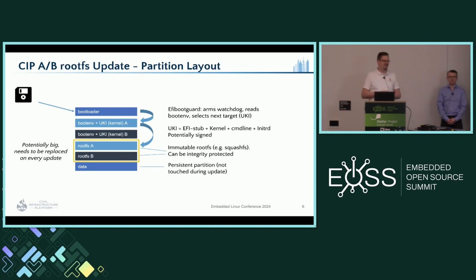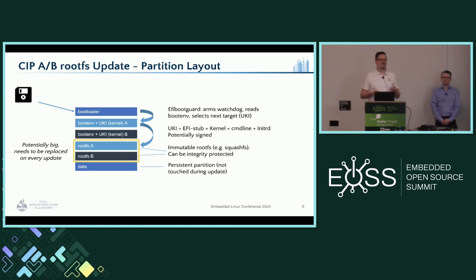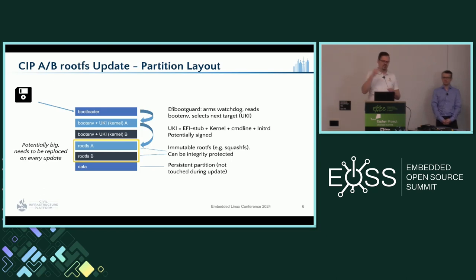Even if you've already split kernel and rootFS, if a single file changes in the rootFS you may have to replace everything. There's a technical reason: the UKI has a logical correlation with the rootFS because it must contain the DMVerity root hash for the rootFS. So if you update the rootFS by just replacing a file, you get a different root hash, and because you get a different root hash, you have to redistribute an updated UKI image. A single change can impact the whole chain significantly.